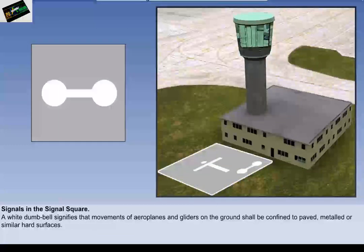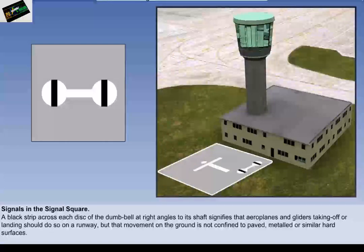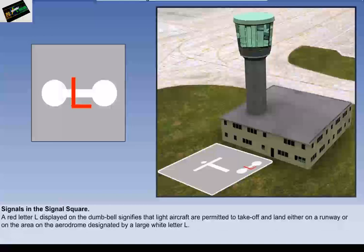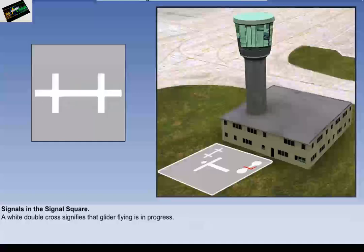A white dumbbell signifies that movements of aeroplanes and gliders on the ground shall be confined to paved, metalled or similar hard surfaces. A red letter L, displayed on the dumbbell, signifies that light aircraft are permitted to take off and land either on a runway or on the area on the aerodrome designated by a large white letter L. A white double cross signifies that glider flying is in progress.